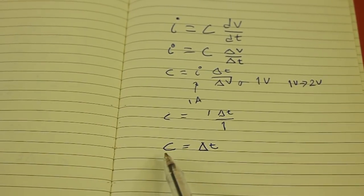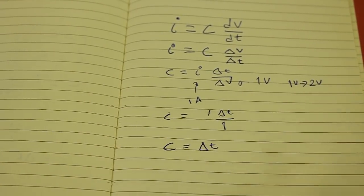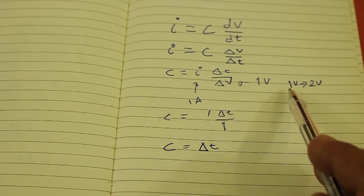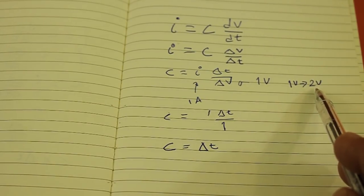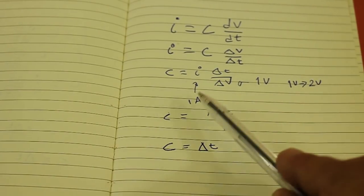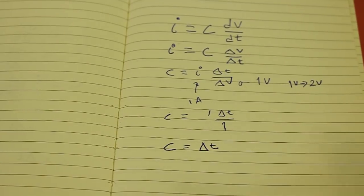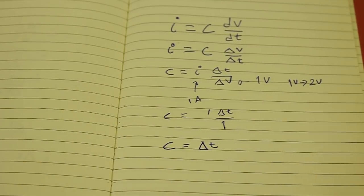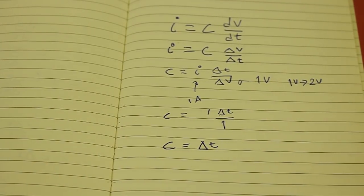What is the meaning of this? If we charge a supercapacitor from a voltage of 1 volt to 2 volts with a constant current of 1 amp, then the capacitance will be equal to the time in which we charge the capacitor. Let's see a practical example.